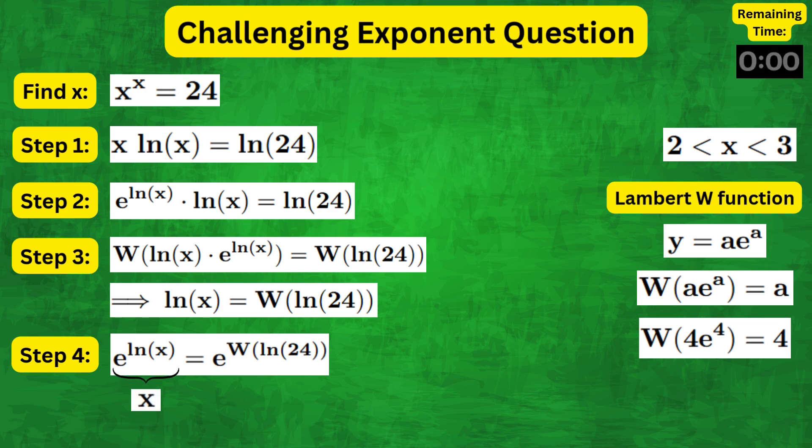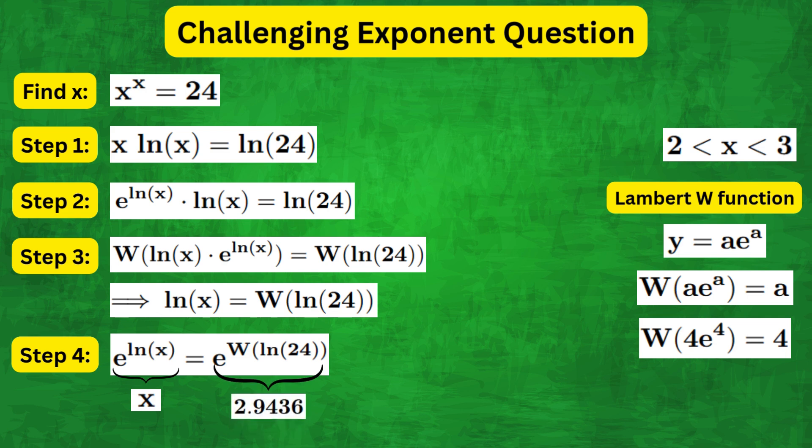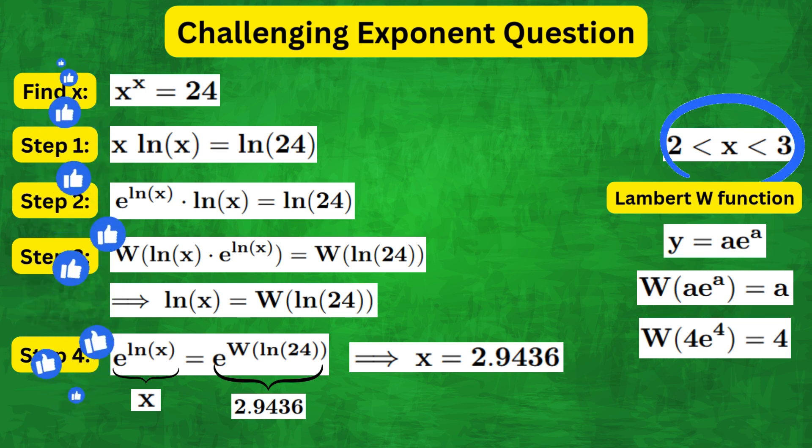Finally, e to the natural log of x is x, and using Python libraries, e to the W of natural log of 24 can be evaluated as 2.9436, which is your answer and is indeed between 2 and 3.